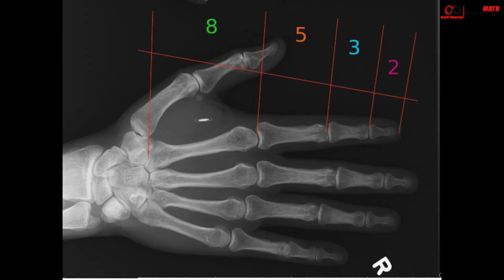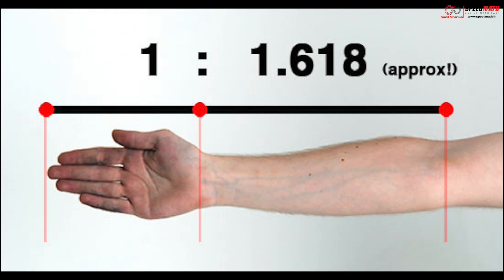each of which has three parts separated by two knuckles. The golden ratio can also be seen in the measurement of different body parts.